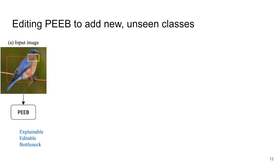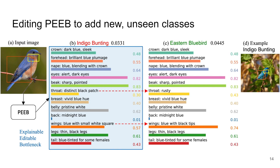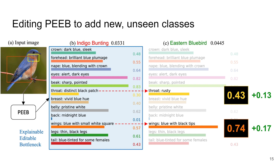Given an indigo bunting image, PIP misclassifies it as indigo bunting — a similar class — because indigo bunting does not exist in the dataset. We can create the indigo bunting class by simply cloning these descriptors and editing them, specifically the throat and wings descriptors. The matching scores of the new throat and wings increase, and PIP now correctly predicts the top-one label for this image.